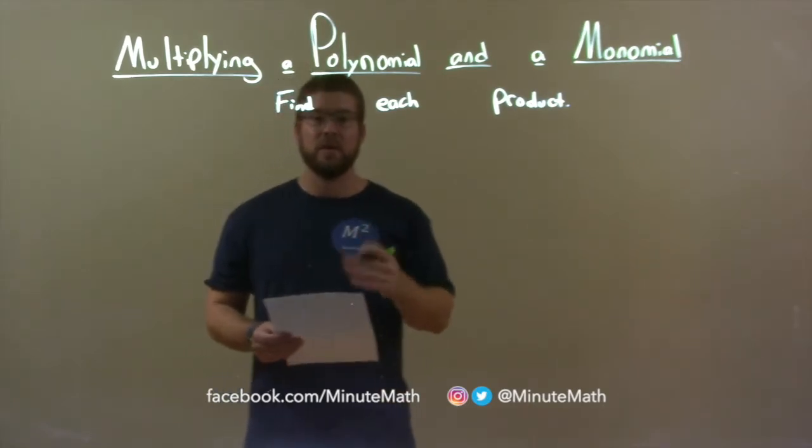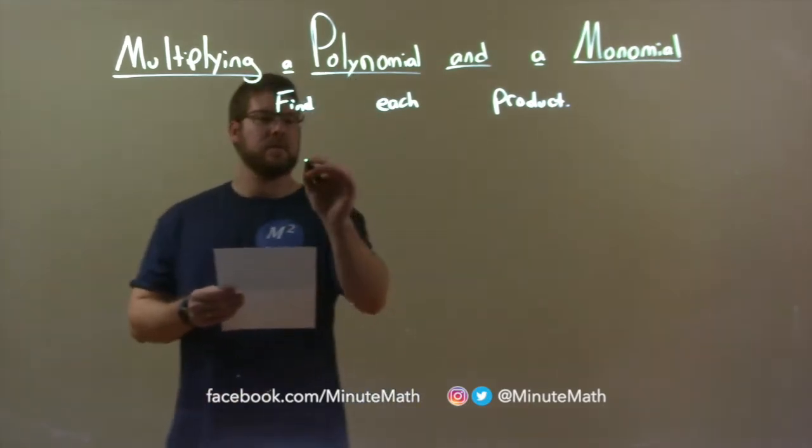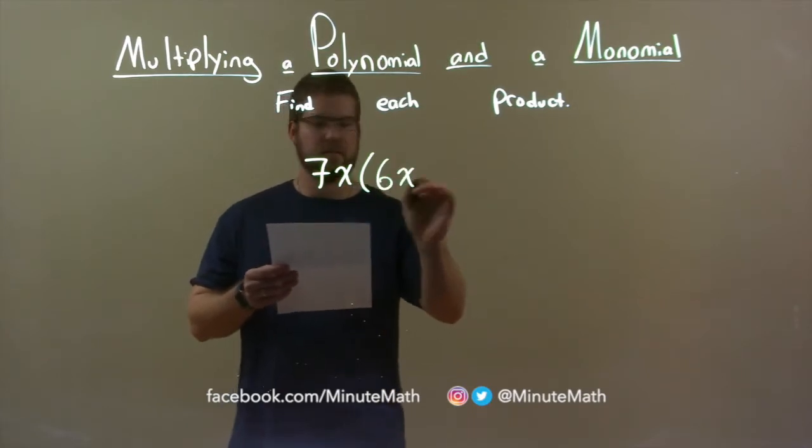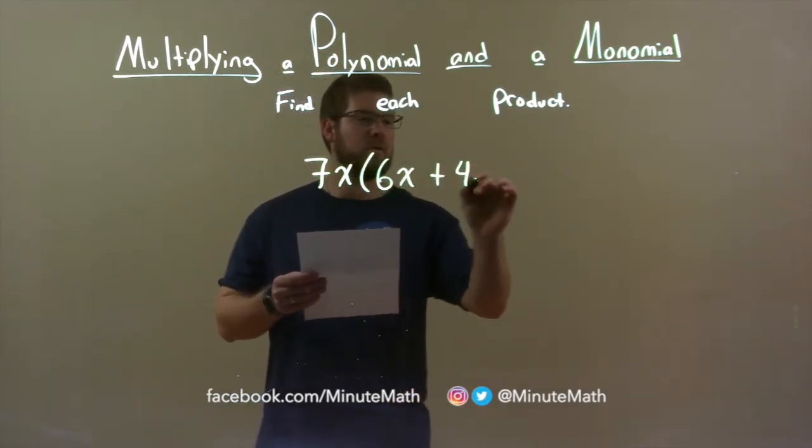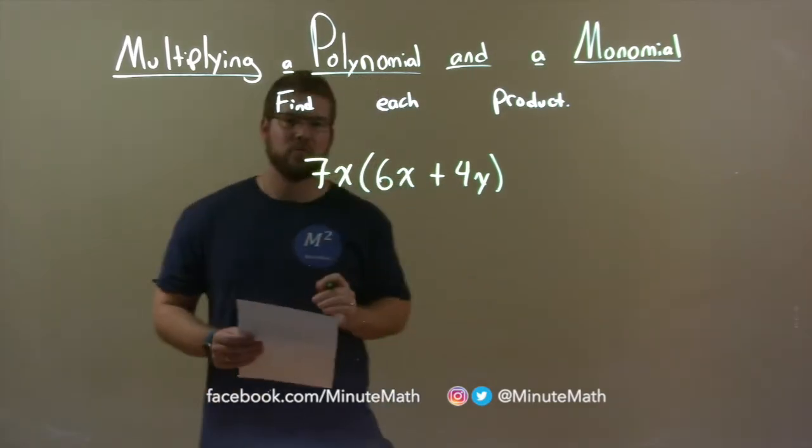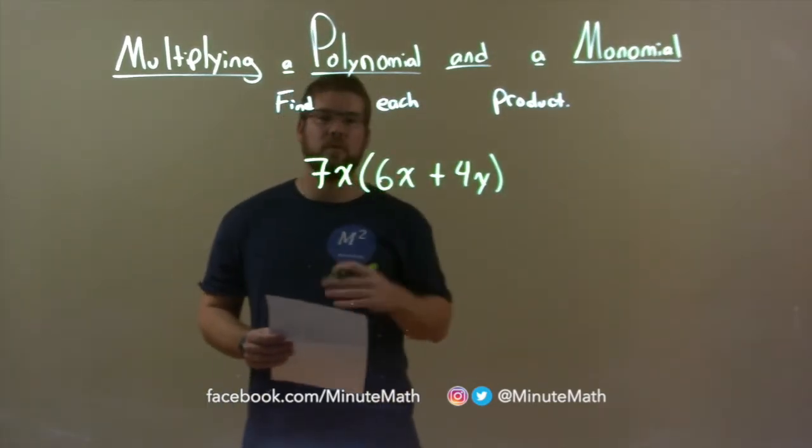If I was given this product, 7x times 6x plus 4y, I want to distribute the 7x to both terms in the parentheses.